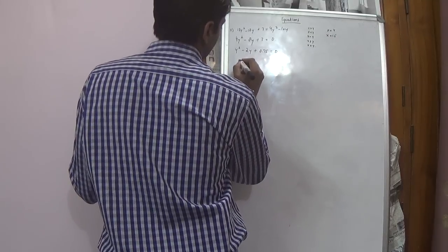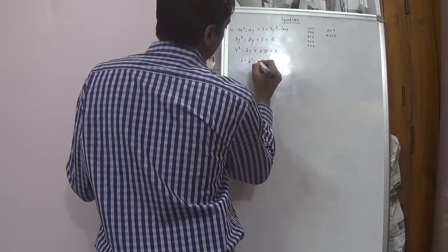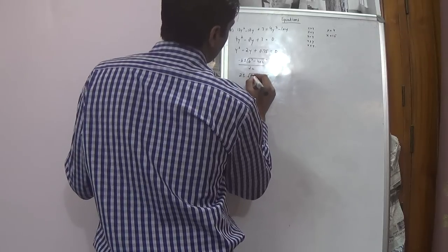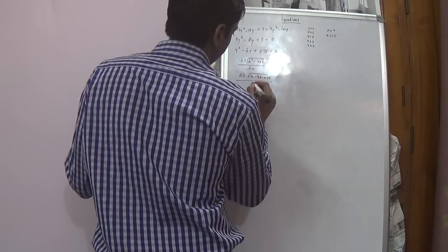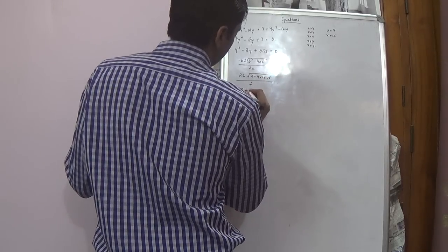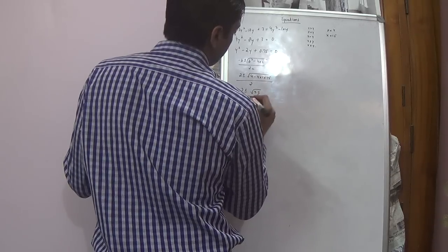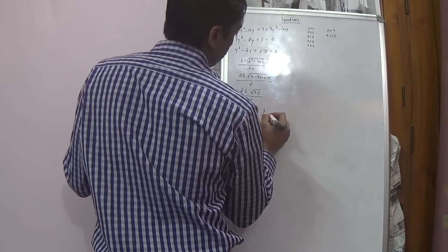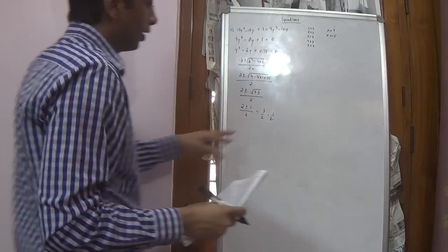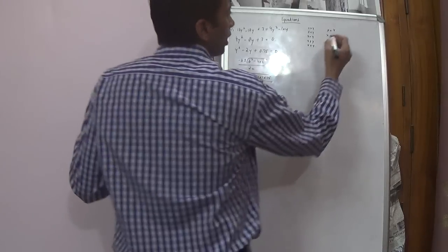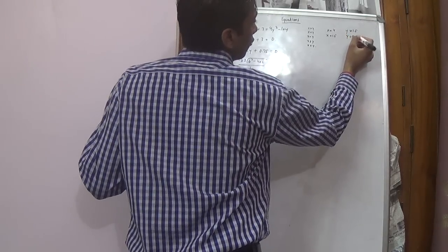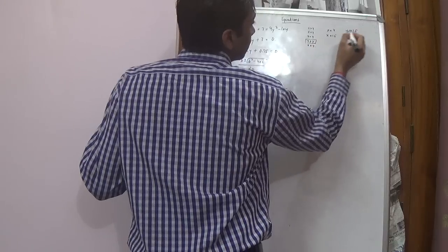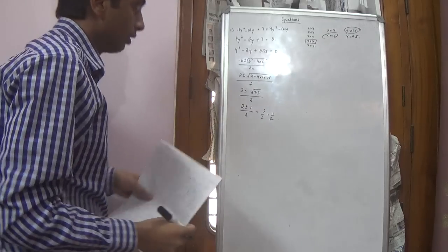Solving using the quadratic formula: minus B is 2, plus or minus root of B square minus 4 into 1 into 0.75, over 2. This gives 2 plus or minus root of 1, over 2, giving y equals 1.5 and y equals 0.5. So x equals 4 and 1.5, and y equals 1.5 and 0.5. Therefore y is less than or equal to x — in one case it is equal (both 1.5), and in other cases y is less than x.